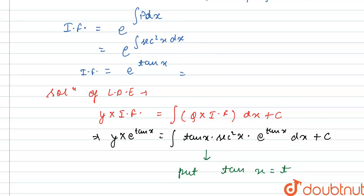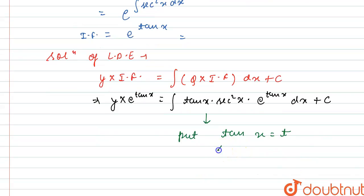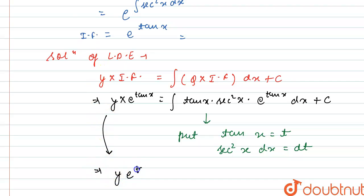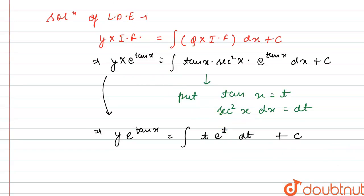Differentiating both sides of tan x = t gives sec²x dx = dt. Substituting, the equation becomes y · e^(tan x) = integral of t · e^t dt + C, since sec²x dx becomes dt and tan x becomes t.